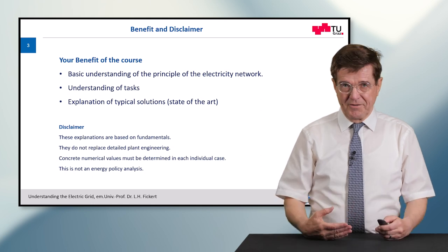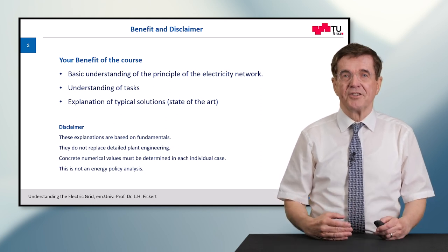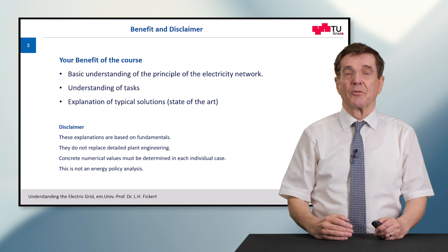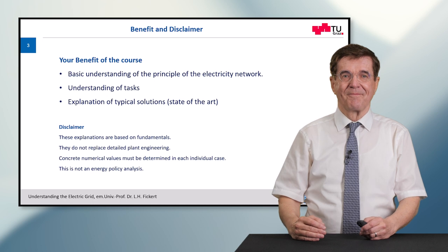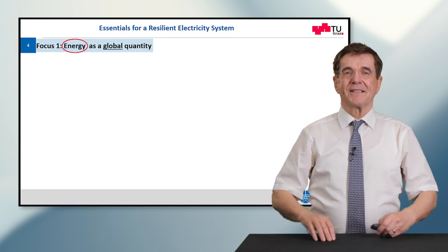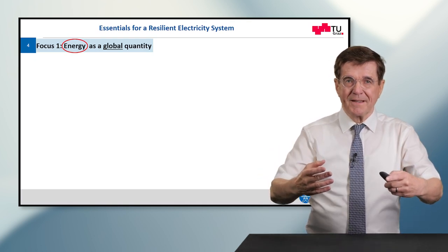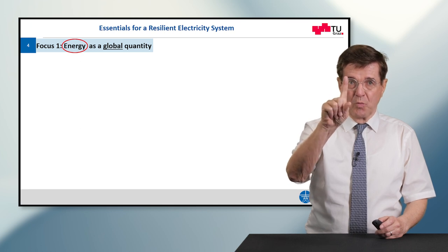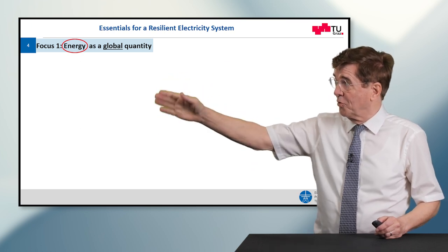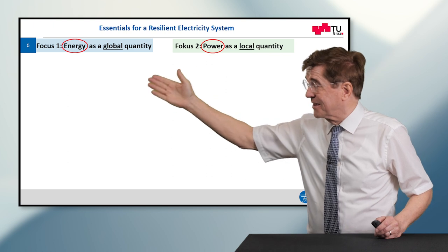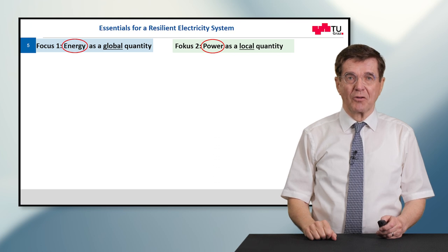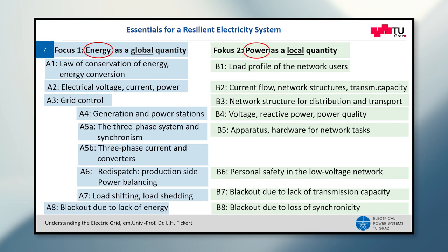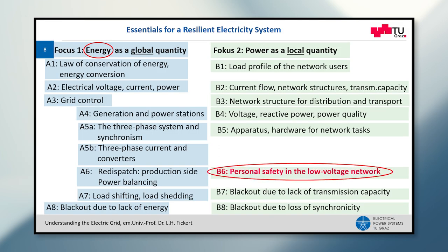These explanations are based on fundamentals and this is not an engineering course. When it goes to detailed plan engineering, please refer to specialists. To understand the electric power system there are two focus lines: focus line number one is energy as a global quantity, and focus line number two is power as a local quantity. For the sake of completeness I give you the full content of my course, but today we want to talk about personal safety in the low voltage network.